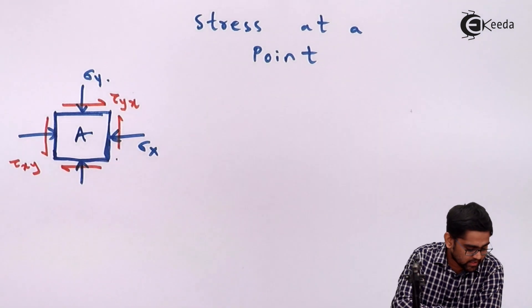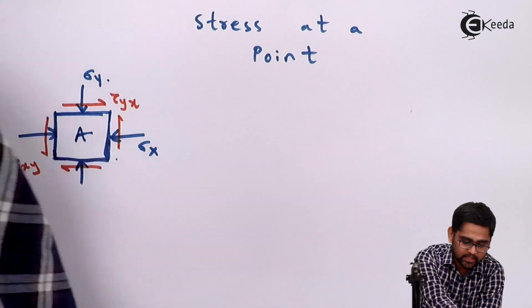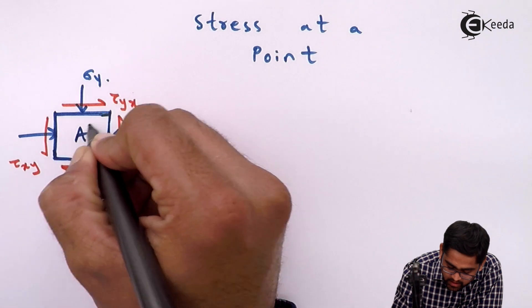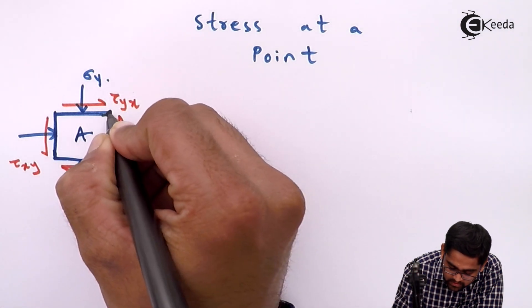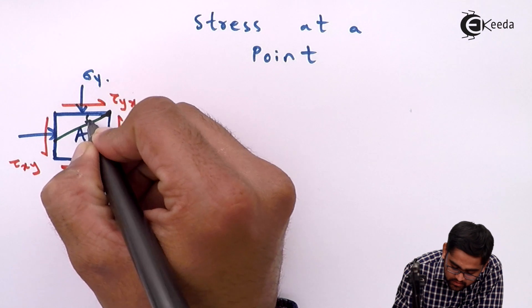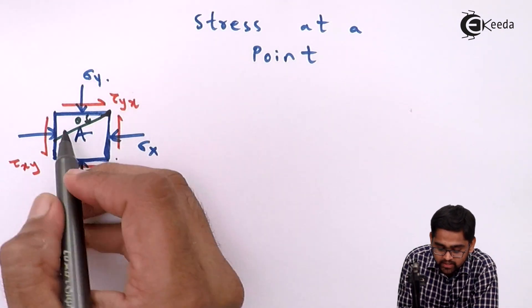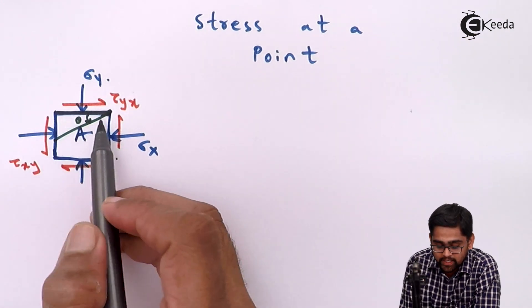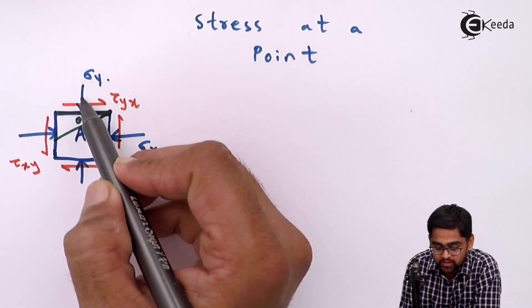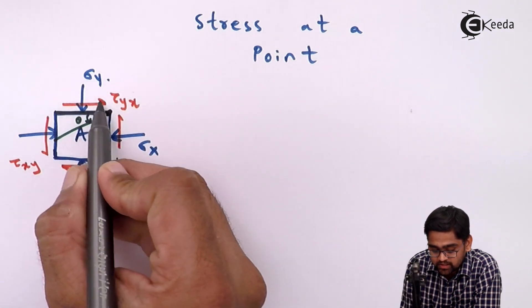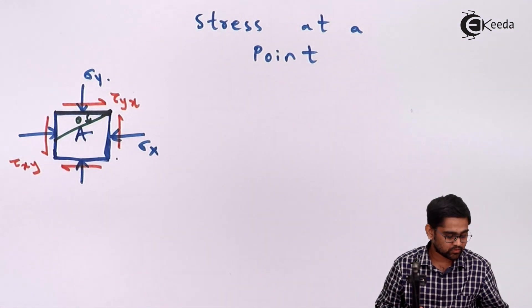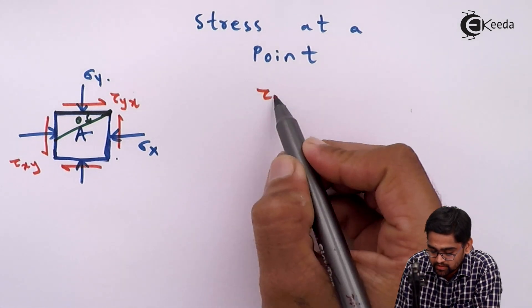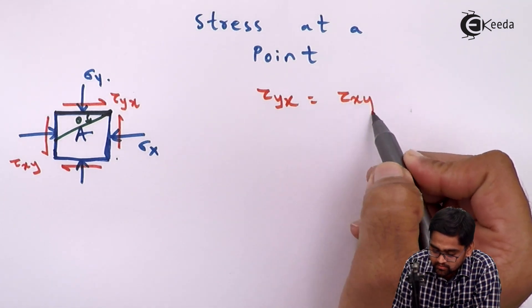If we take a plane inside this specimen inclined at an angle theta, using this as the reference plane, on this plane there is a normal stress sigma y and a tangential shear stress equal to tau yx or tau xy. These are the same because they are balanced by the moment equilibrium equation — tau xy and tau yx are equal.